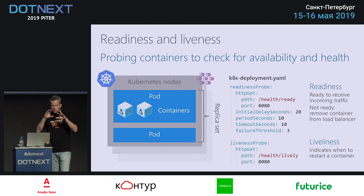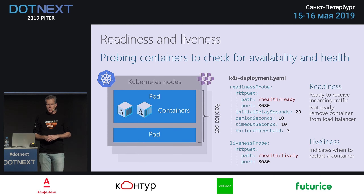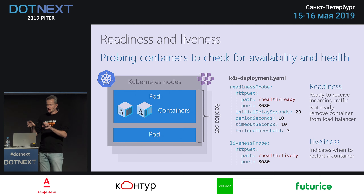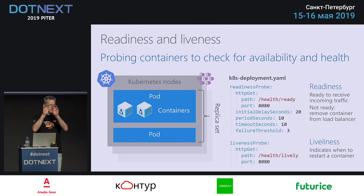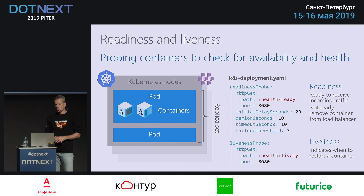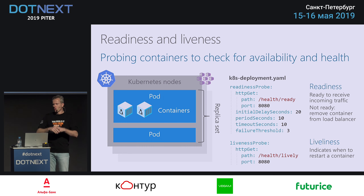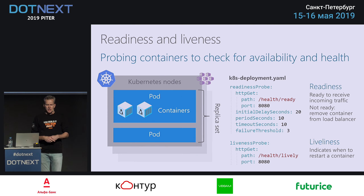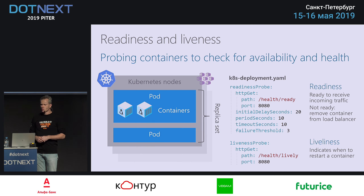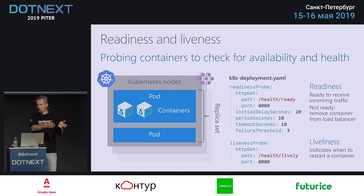Inside Kubernetes, it has the notion of pods — usually just one container, but it can be a container with a sidecar. The orchestrator takes care of placing pods on nodes, choosing the less busy ones and making sure they're safely distributed. If you have five nodes and ask for three replicas, it will not put all three on one node, because if the node goes down, everything goes down. So it distributes them evenly — that's what you can configure.